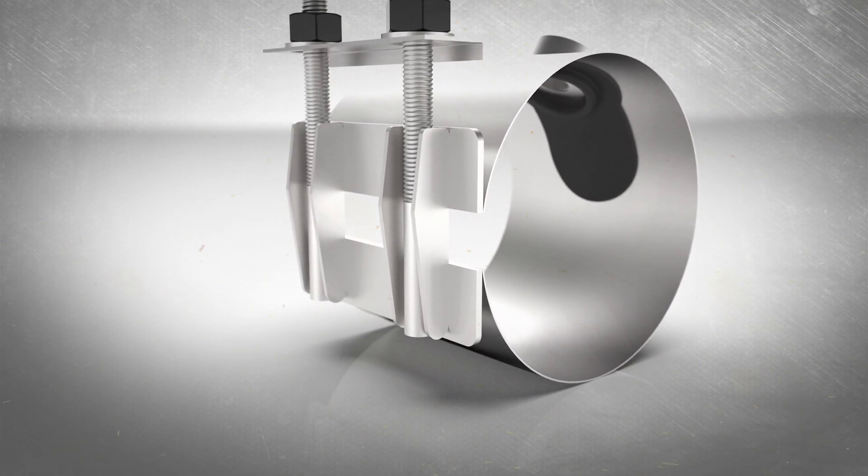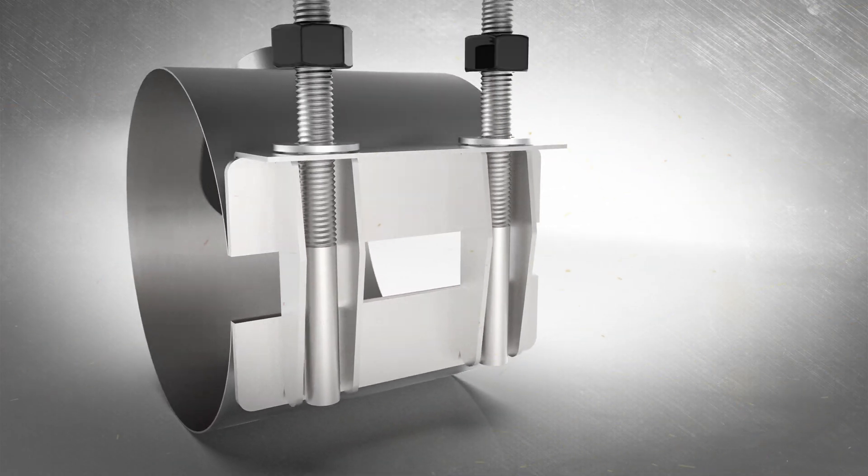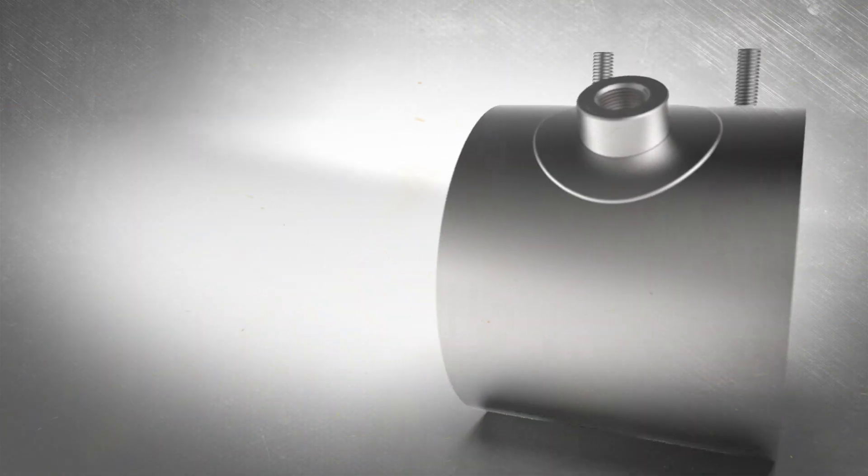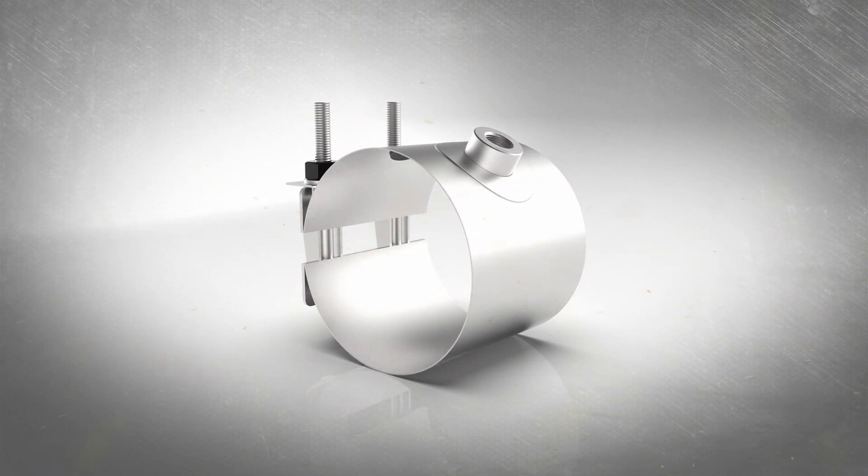Rounded corners and larger bolt holes allow smoother movement when closing the saddle around the pipe. The FS300 series gasket retention provides a long-lasting secure seal.